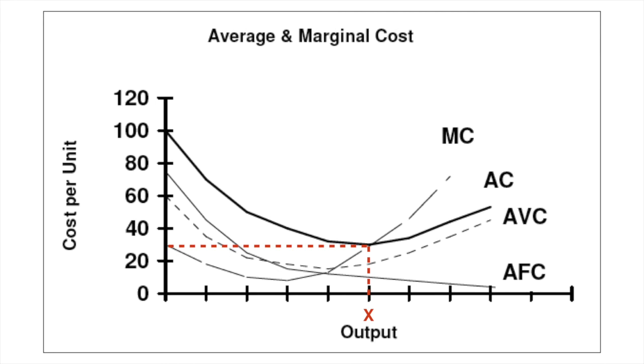Similarly, on this diagram we can see that at output x, all average cost gains have been achieved for this combination of the factors of production.